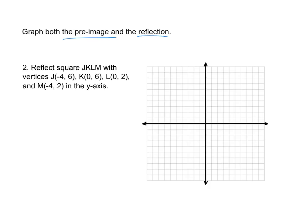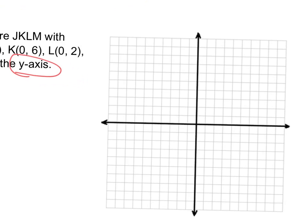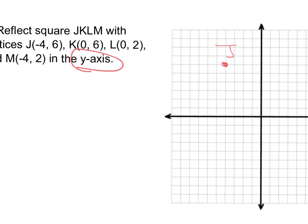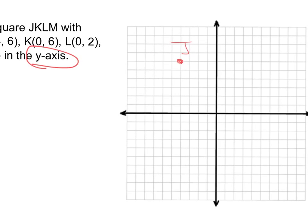So graph the pre-image and the reflection. You've got a square, now you're trying to reflect it over the y-axis. So negative 4, 6, let's zoom in here a little bit so you can see a little better. So negative 4, 6. There's J. Next point is going to be 0, 6. So that's K.